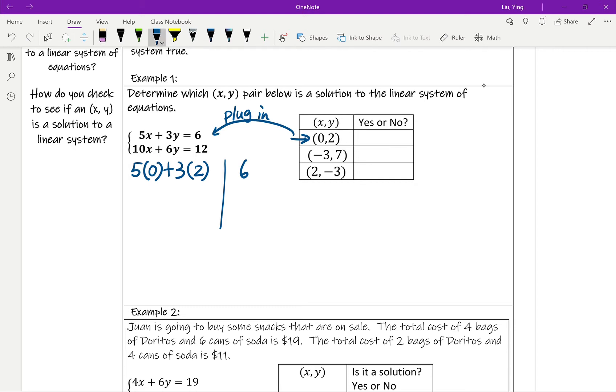So 5 times 0 is 0. 3 times 2 is 6. 0 plus 6 is 6. So that's the left hand side. And the right hand side is also 6. So that means this solution fits the first equation.